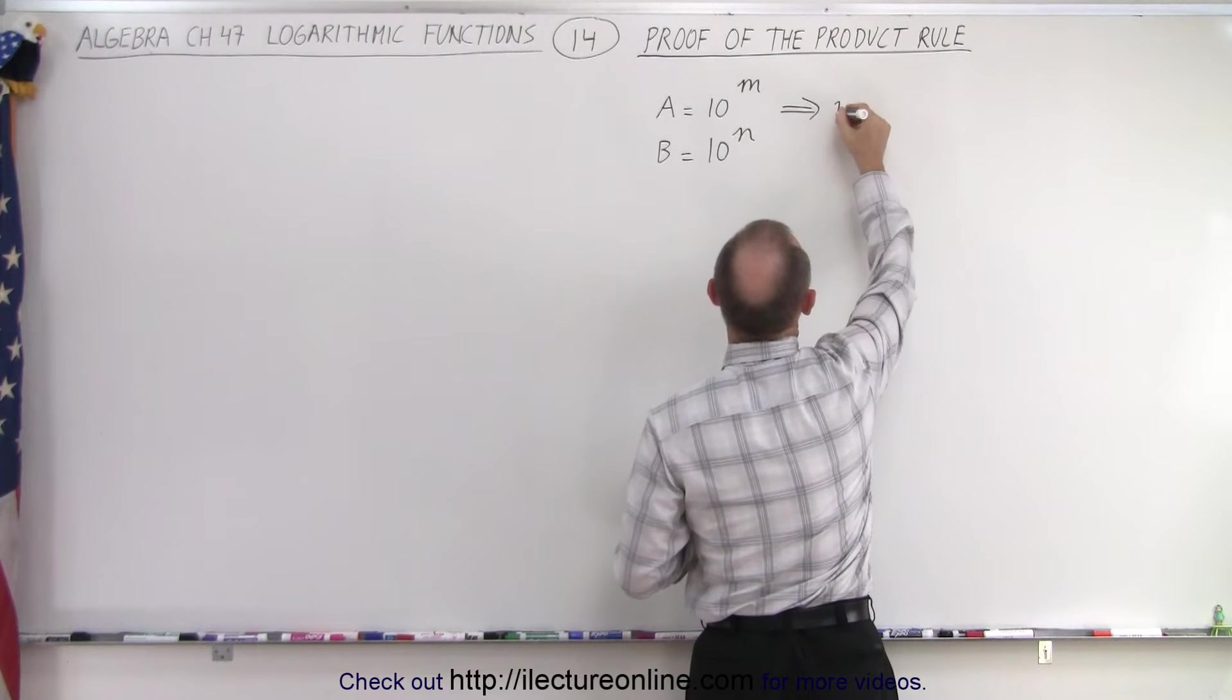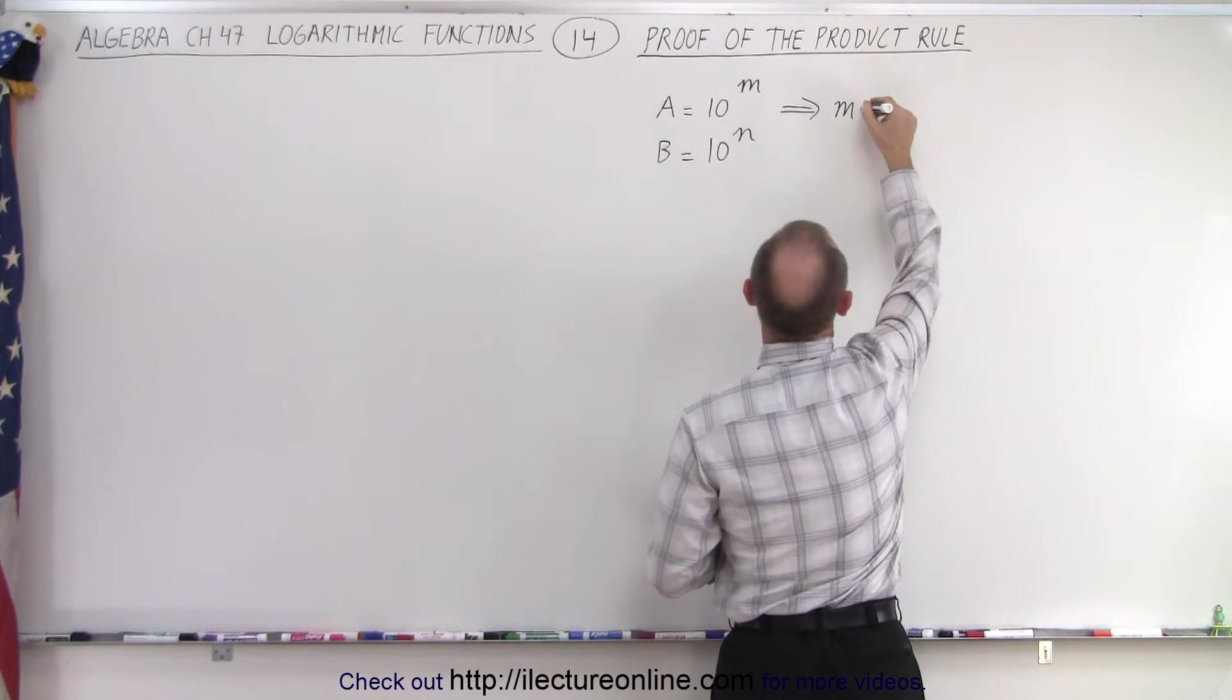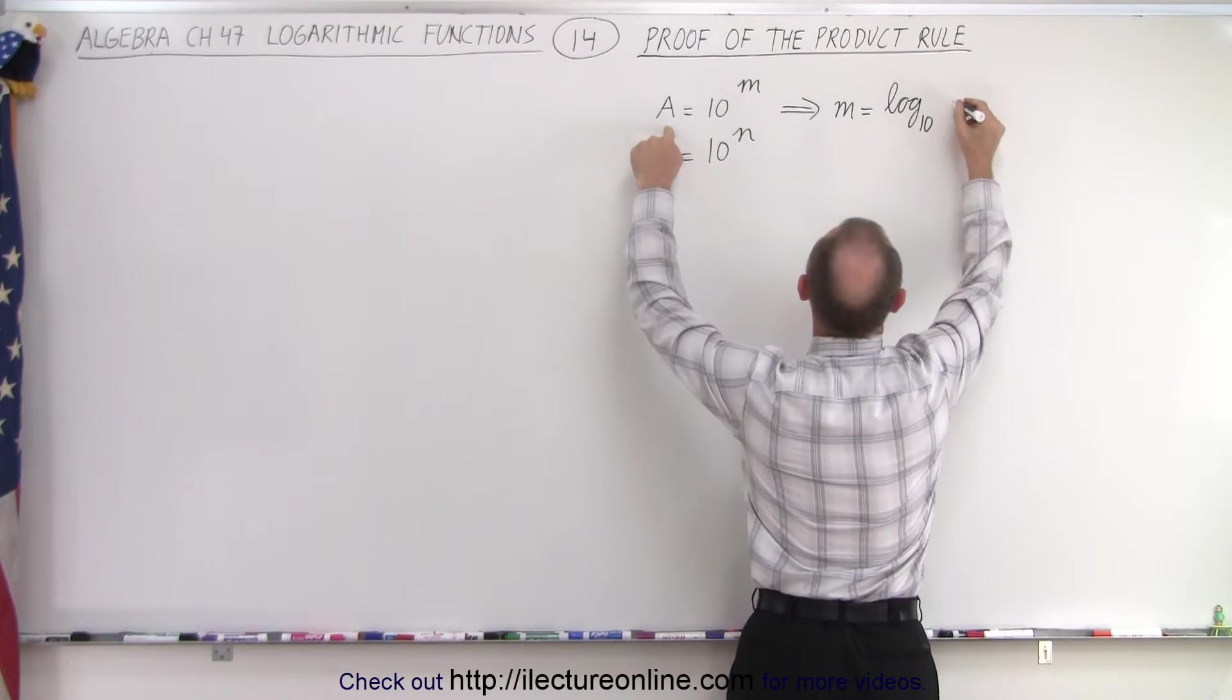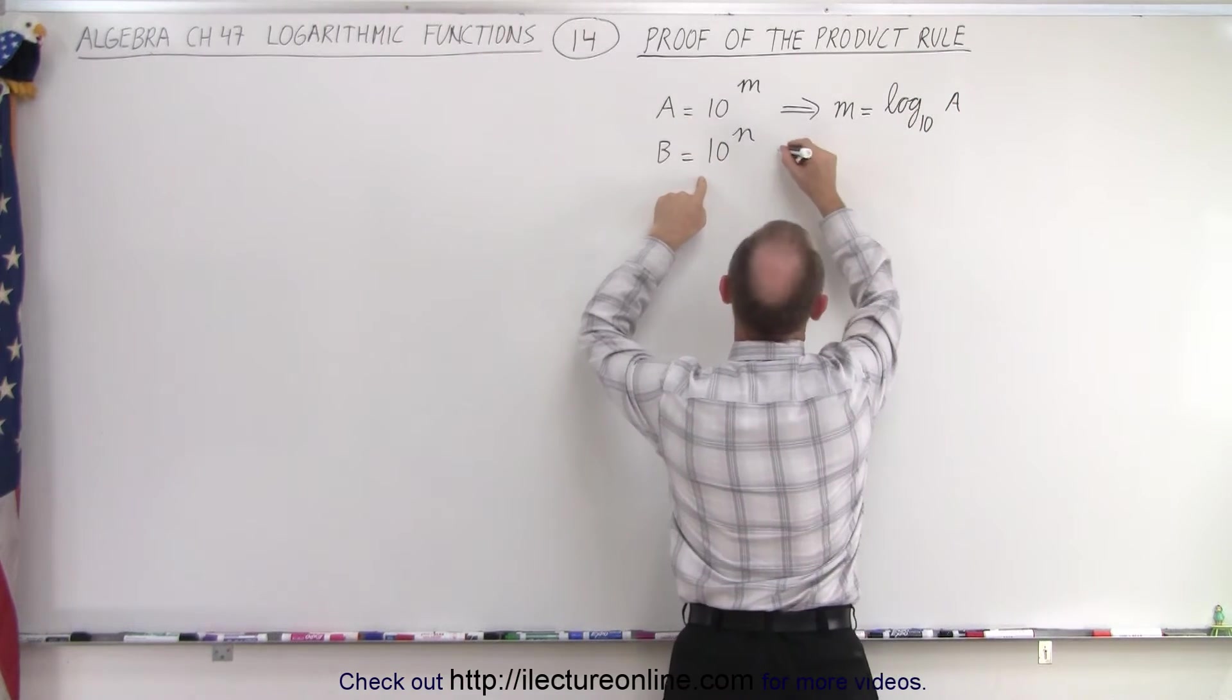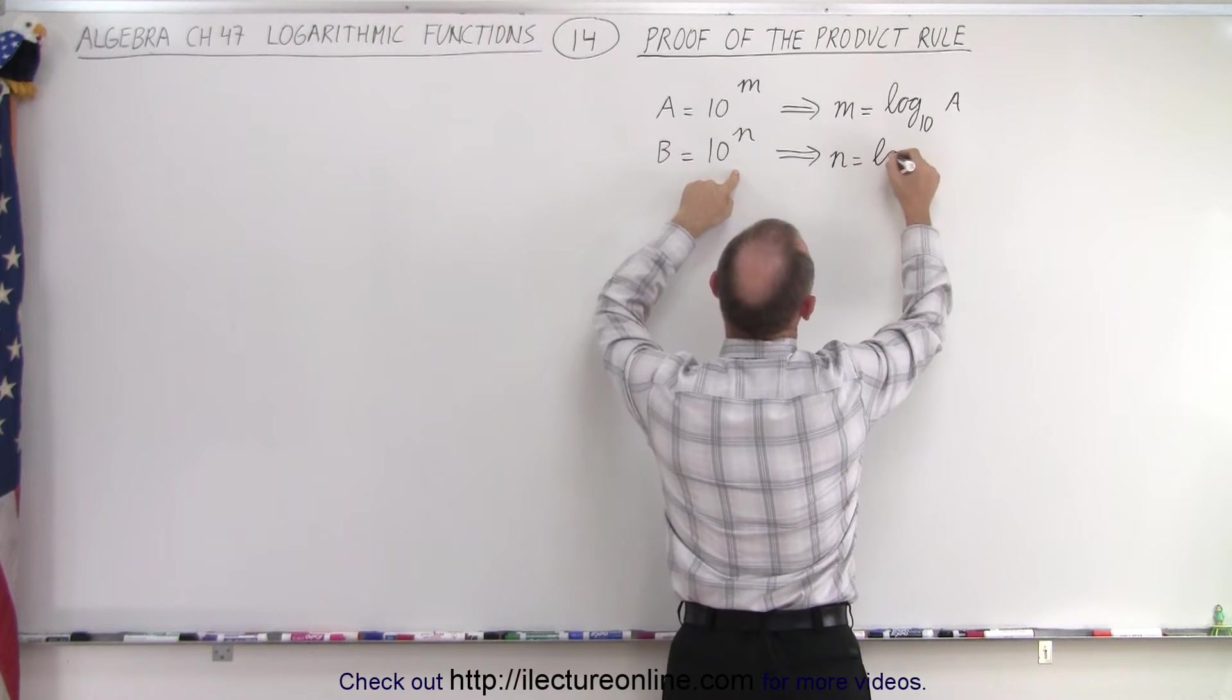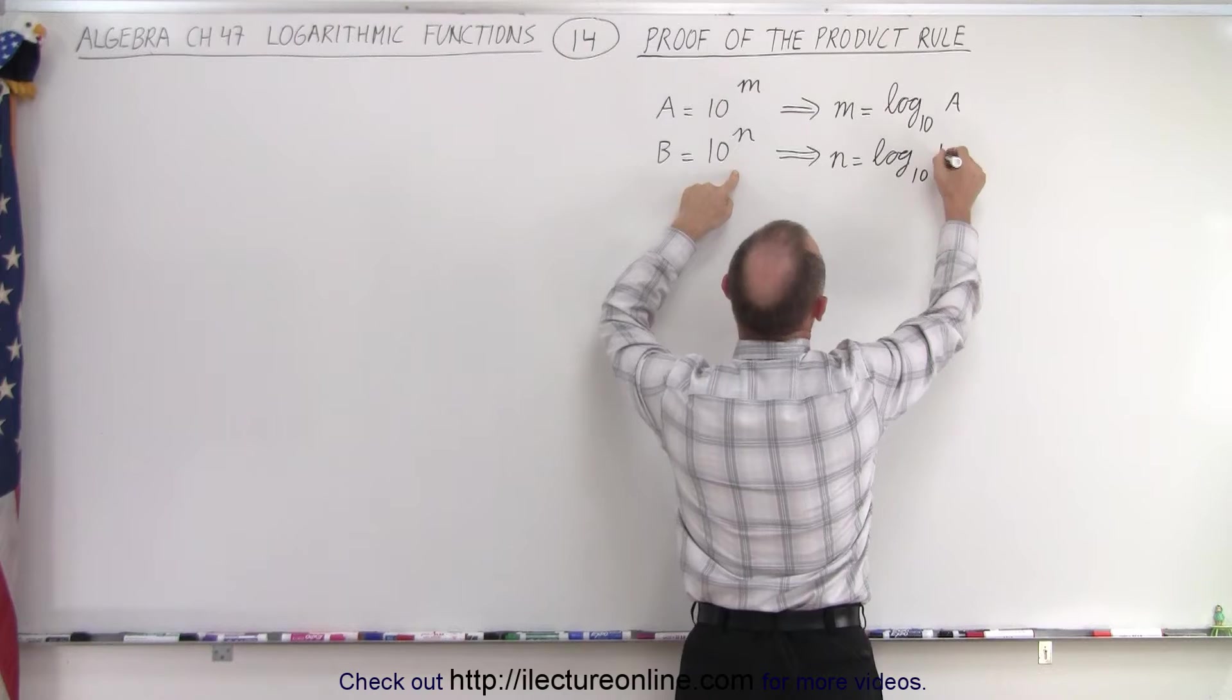This can be written that m, we take the exponent, which is equal to the log base 10 of A. And over here we can write this as n is equal to the log base 10 of B.